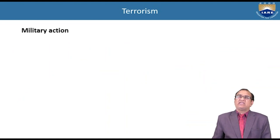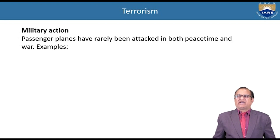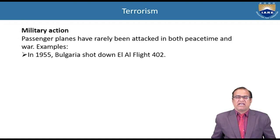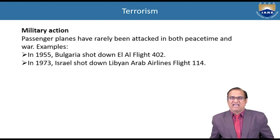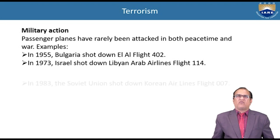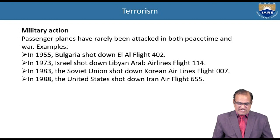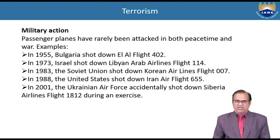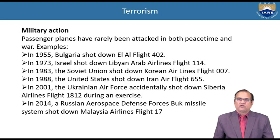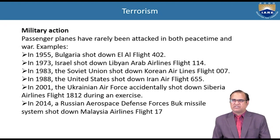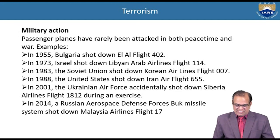Terrorism is also a major problem for aircraft safety, requiring military action. Examples include: in 1955 Bulgaria shot down an aircraft; in 1973 Israel shot down Libyan Arab Airlines flight 114; in 1983 the Soviet Union shot down Korean Airlines flight 007; in 1988 the United States shot down Iran Air flight 655; in 2001 the Ukrainian Air Force accidentally shot down Siberian Airlines flight 1812 during an exercise; and in 2014 Russian airspace defense shot down Malaysian Airlines flight 17.